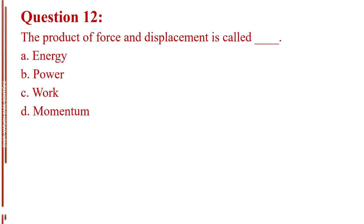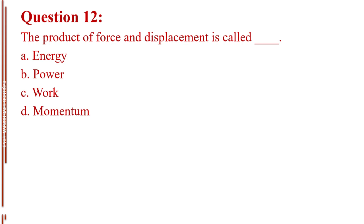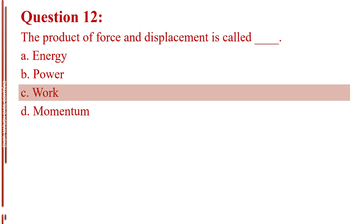Question number 12. The product of force and displacement is called blank. Letter A, energy. Letter B, power. Letter C, work. Letter D, momentum. The answer is Letter C, work.